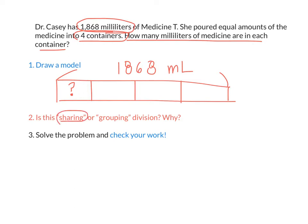So in your, for step two right now, this is a sharing problem because, we could write something like, this is a sharing problem because we're trying to find out how much medicine can be shared equally into four containers. Now, if we solve it, we know we have to take our total number of milliliters, which is 1,868, that's our whole, and we're dividing it by our divisor, which is four, into four equal groups, right? So let's go ahead and divide.